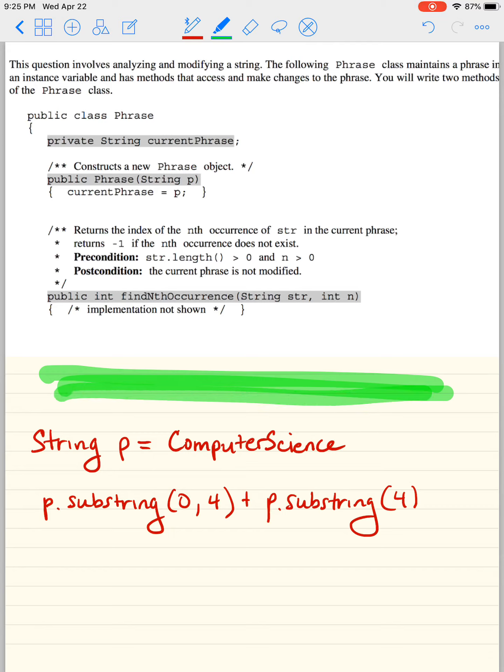I have string p equals computer science. And I wanted to remind you guys that if you have p dot substring with two numbers, so in this case, zero comma four, what this does here is it goes from zero to three. So it gives you this. So this part here will print out c o m p.